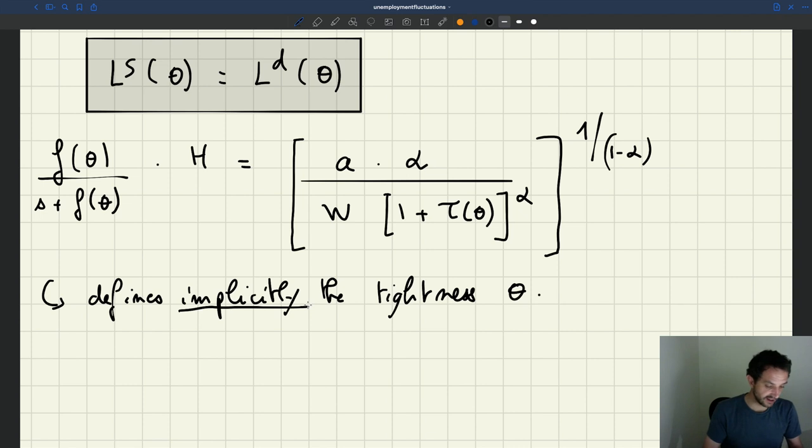And then we know that once we have the tightness, we can figure out what is the unemployment rate in the economy. And so you remember that we can compute u, the unemployment rate that's predicted by the model, that's going to be equal to s divided by s plus f of theta. So once I have my tightness, I can figure out my unemployment rate. And then I can make sure that I get these properties that the unemployment rate has large fluctuation and is countercyclical.